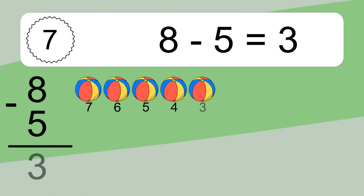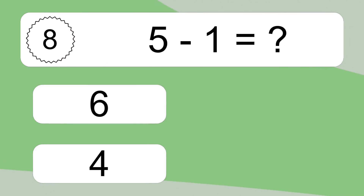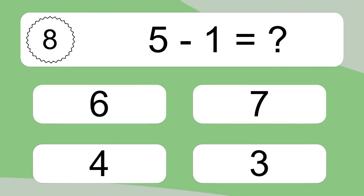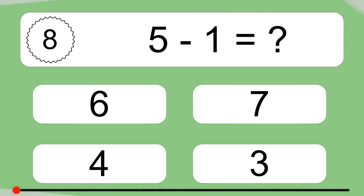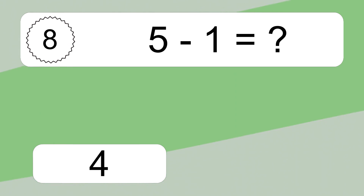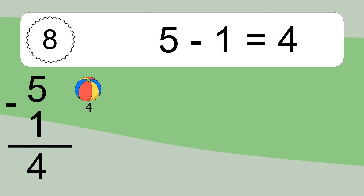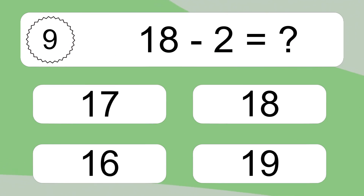8 minus 5 equals 3. Let's count it: 7, 6, 5, 4, 3. 5 minus 1 equals what? 5 minus 1 equals 4. Let's count it: 4. 18 minus 2 equals what?